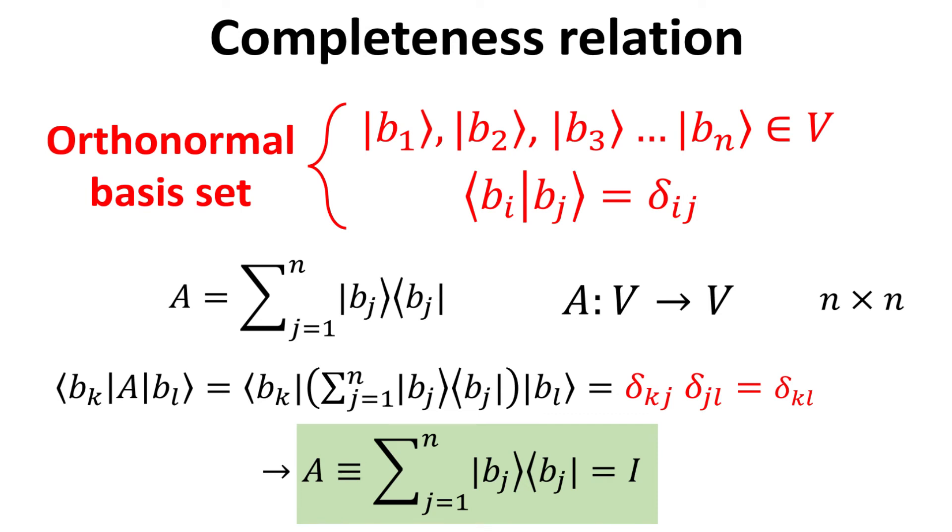This means that the matrix elements are 1 if k is equal to l. Otherwise, they are 0. Which describe a diagonal matrix with diagonal elements equal to 1. Hence, A is simply the identity matrix.